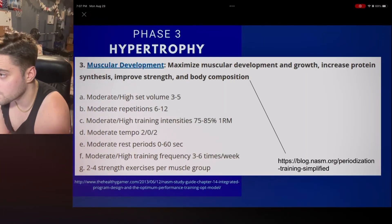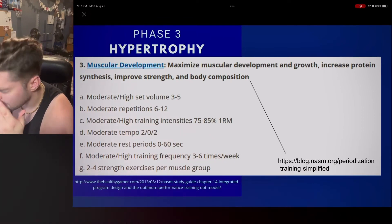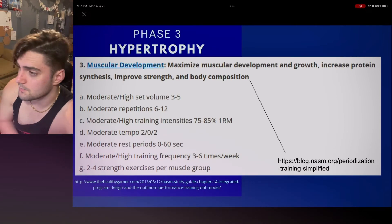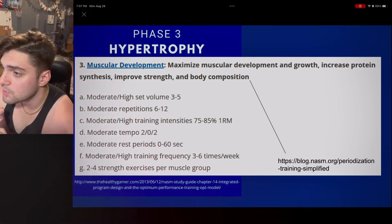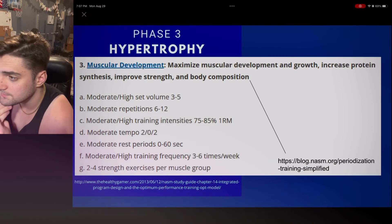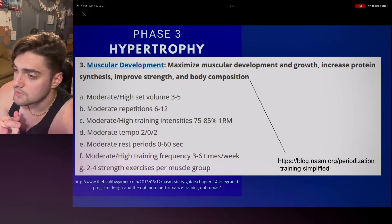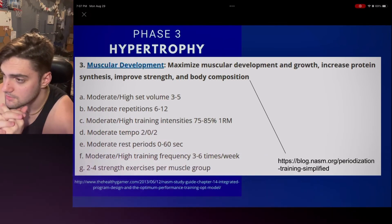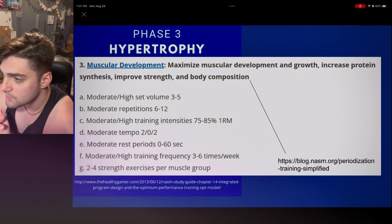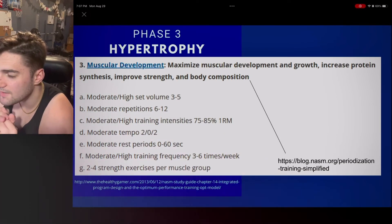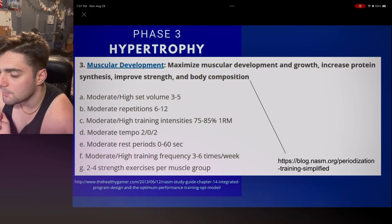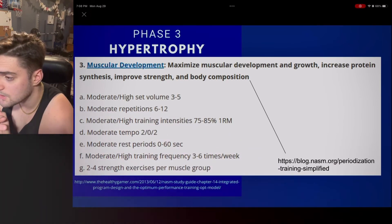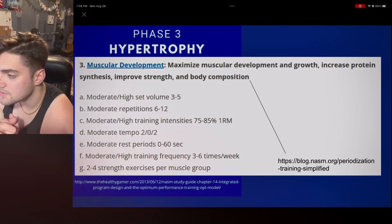Now we're into phase three, hypertrophy — or muscular development, as the current edition calls it. The goal is to maximize muscular development and growth to increase protein synthesis and improve strength and body composition. Acute variables: moderate to high set volume, three to five sets; moderate repetitions, six to 12; moderate to high training intensity, 75 to 85% of 1RM; moderate tempo, 202; moderate rest period, zero to 60 seconds; moderate to high training frequency, three to six times per week; two to four strength exercises per muscle group.